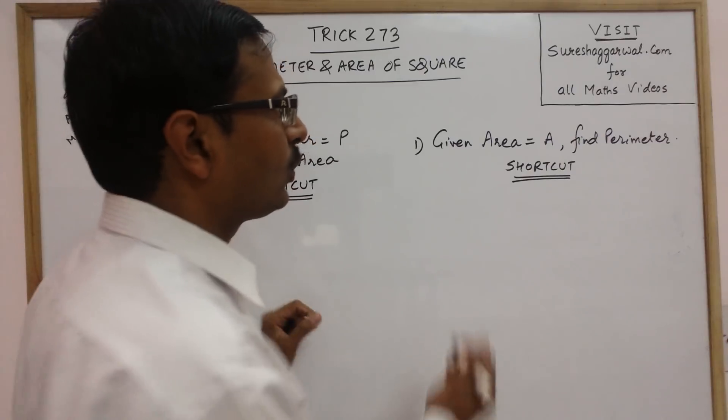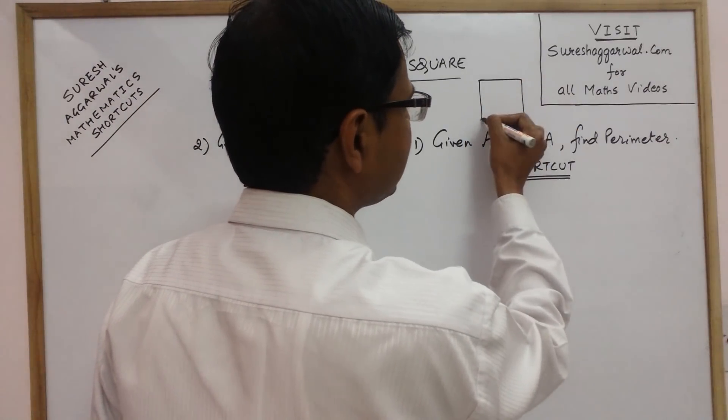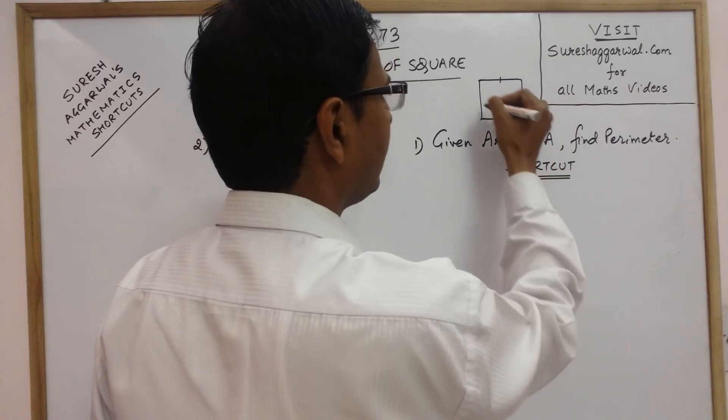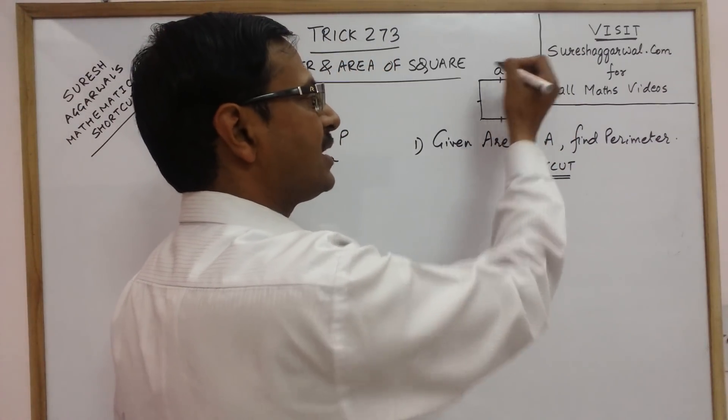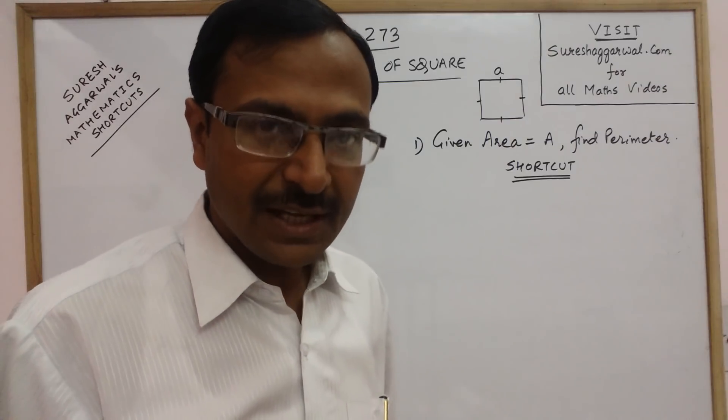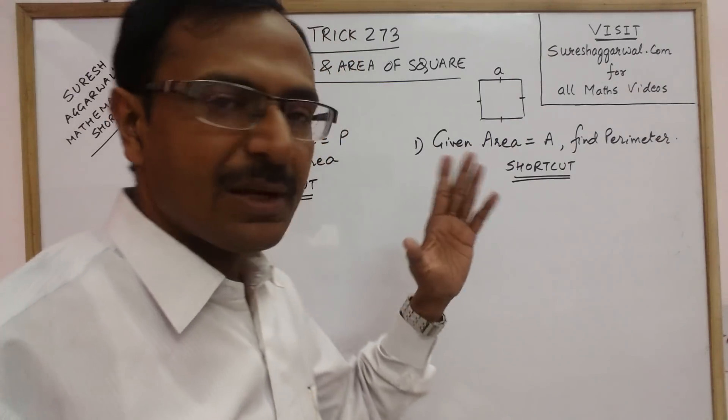We all know that a square has four sides which are all equal. If the side is represented by small a, then we can find its area and also its perimeter.